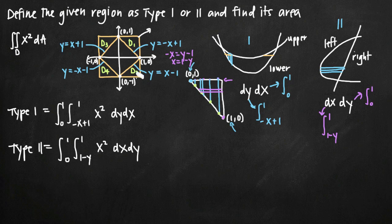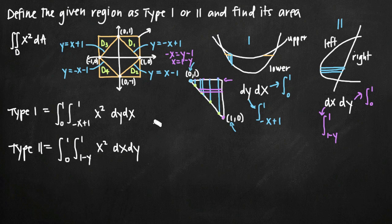It's not always possible to express every region as both a type 1 and type 2 region, but in this case because we have this triangle, we can use either. Both integrals for d sub 1 would give the same answer. Let's go ahead and evaluate the type 1 integral and ignore the type 2 integral.